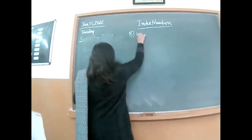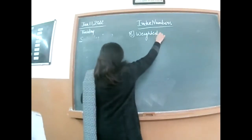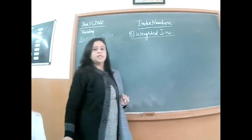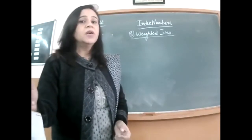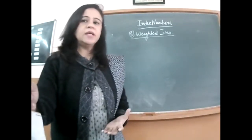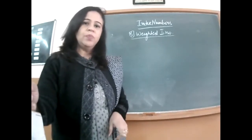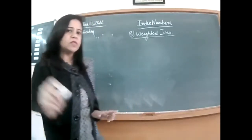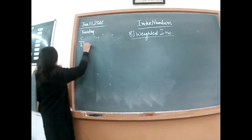Now let's get to the weighted index numbers. We discussed the weighted index numbers before. These can also be constructed in two ways: one is weighted aggregative and another is weighted average of price relatives. First of all, we will do weighted aggregative.